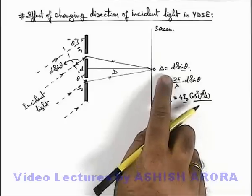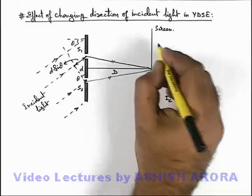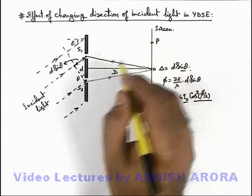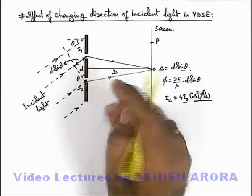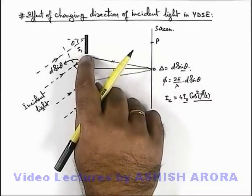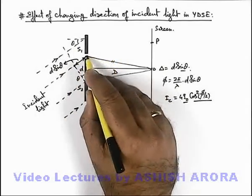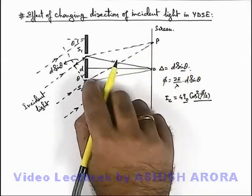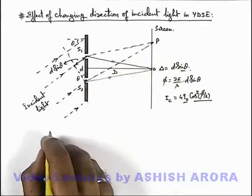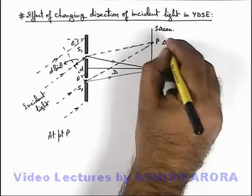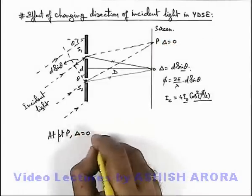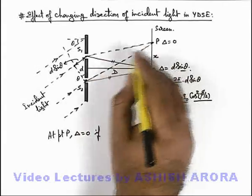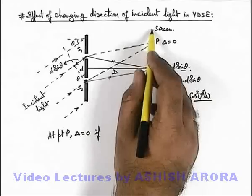Now in this situation, if we wish to locate a point on the screen where the path difference is zero, we can see that point will be located somewhere above center — call this point P. This is the point where the additional path which the wave travels before illuminating slit S1 will be compensated by the path difference between the waves arriving at P from S2 and S1. So we can say at point P the path difference will be zero.